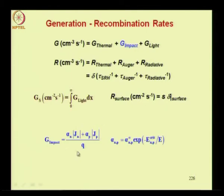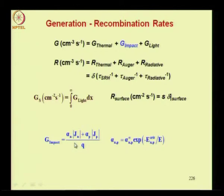For impact ionization, the generation formula involves alpha_n, the ionization coefficient, which gives the number of electron-hole pairs generated by a carrier moving through a unit distance. The ionization coefficient increases rapidly with increasing electric field, as shown by its exponential relation.